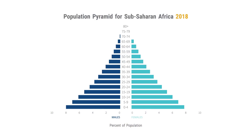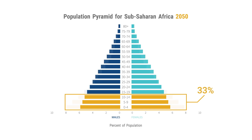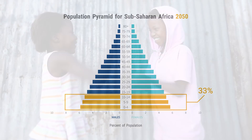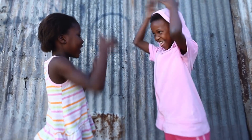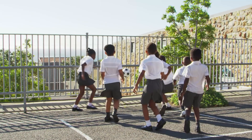In Sub-Saharan Africa, most of the population is still very young. Today, 43 percent of the population is under the age of 15. By 2050, we project that this share will decline to 33 percent of the population. Investing in the health and education of this youthful population is critical for countries hoping to achieve the dividend.